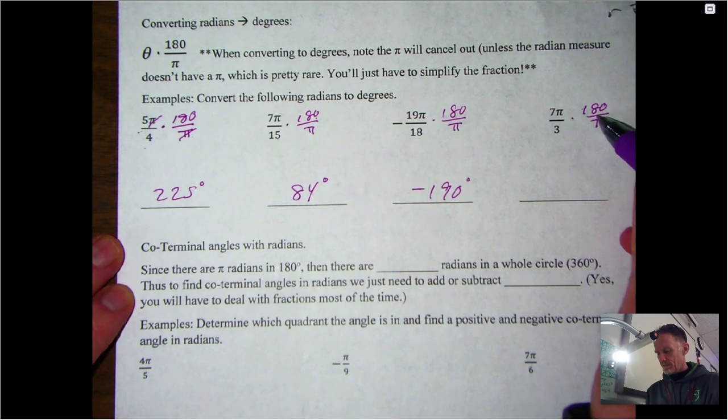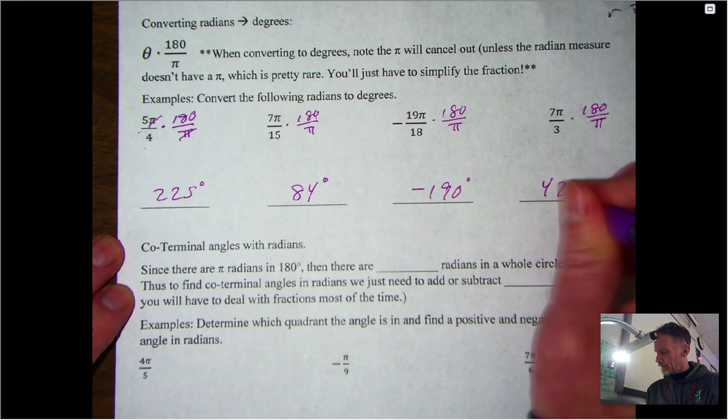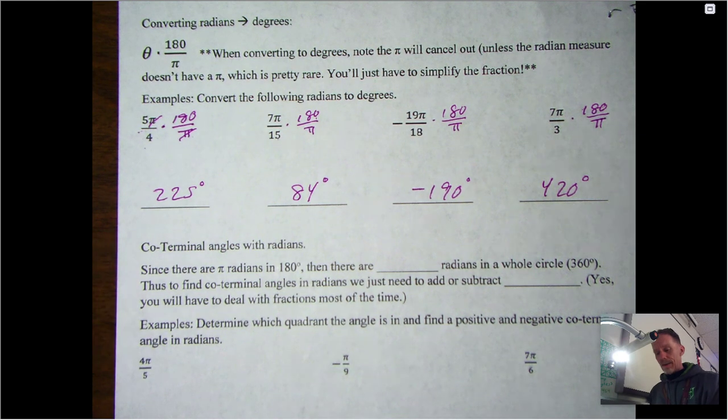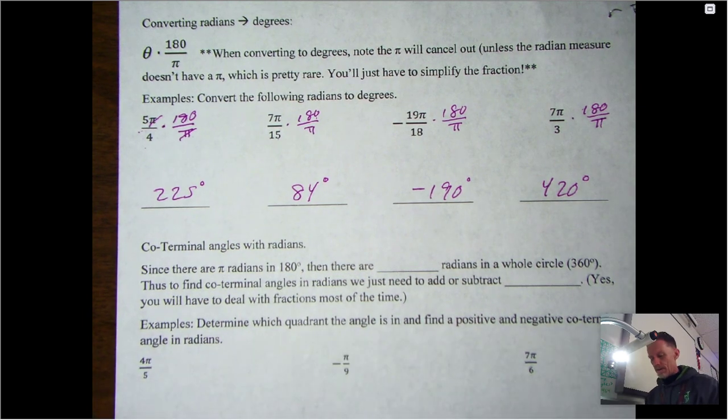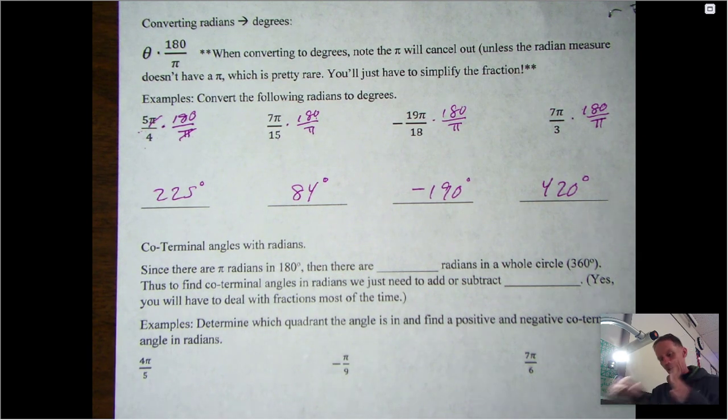Now the last thing we're going to do in this video: if you remember the previous video, we talked about co-terminal angles with degrees where all we had to do was add or subtract 360 to find those. We can do the same thing with radians. If you remember from that picture at the beginning of the video, we know there's π radians in a half circle, so there's 2π radians in a whole circle.